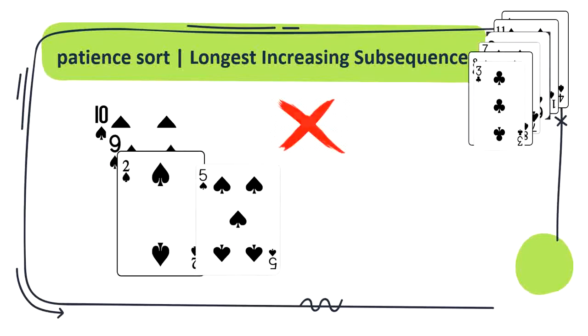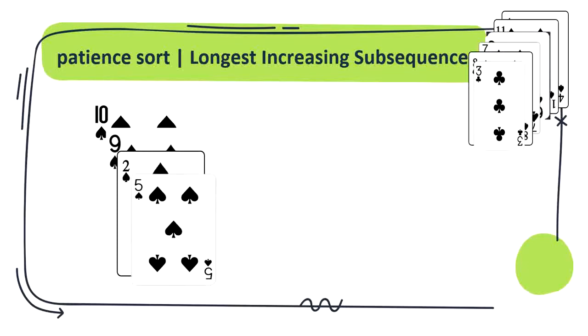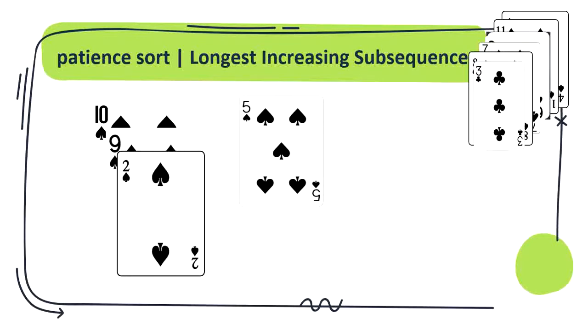The first rule is we can't place a higher valued card onto a lower valued card. The second rule is if no pile has cards with higher value then form a new pile and put the card on it.